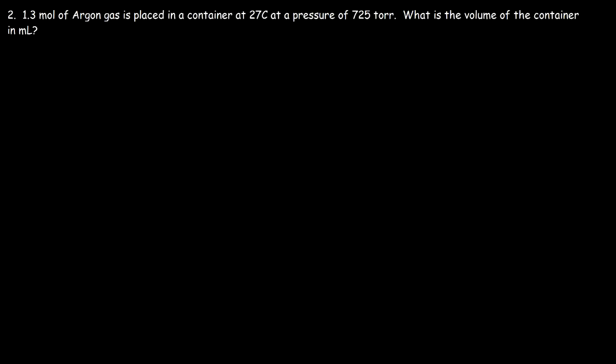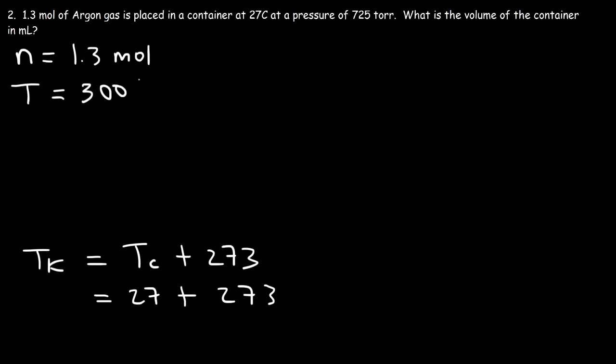So we have n, and n is 1.3 moles. Now this is the temperature in Celsius, but we need the temperature in Kelvin. So to calculate the Kelvin temperature we need to add 273 to the Celsius temperature. So that's going to be 27 plus 273, which is 300 Kelvin. So always make sure that temperature is in Kelvin when dealing with gas laws and equations.